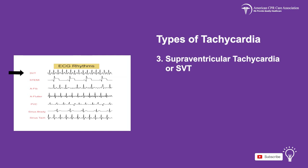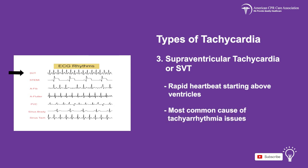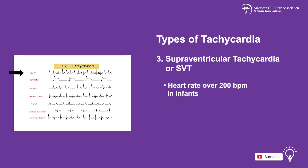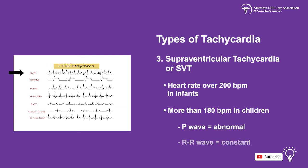The third type is known as supraventricular tachycardia, or SVT, and this is a rapid heartbeat that starts just above the ventricles. SVT is the most common cause of tachyarrhythmia in infants that causes cardiac issues. The heart rate is higher than 200 beats per minute in infants and more than 180 beats per minute in children. The P wave is abnormal, and the RR interval is constant.